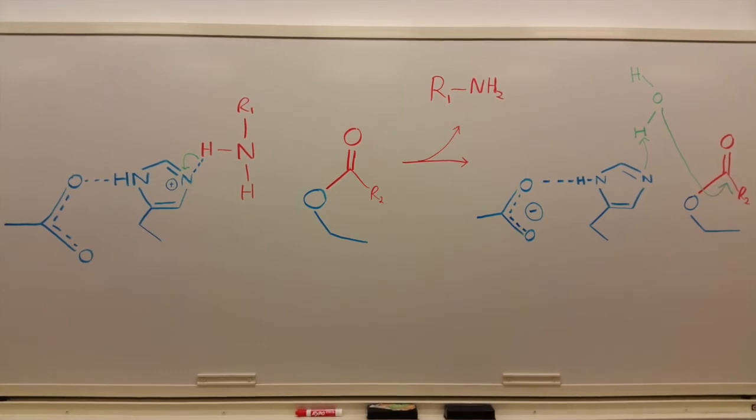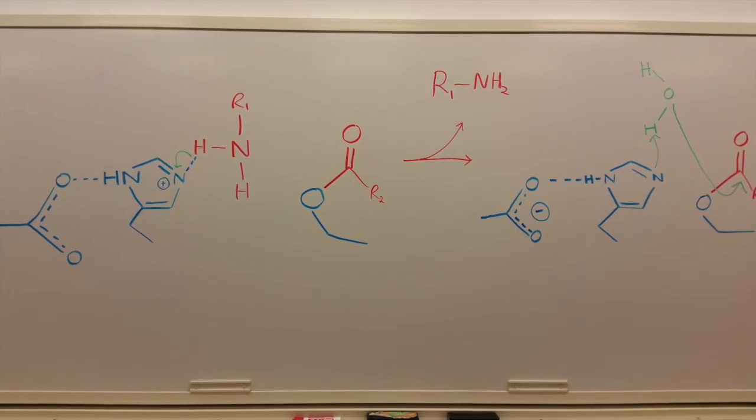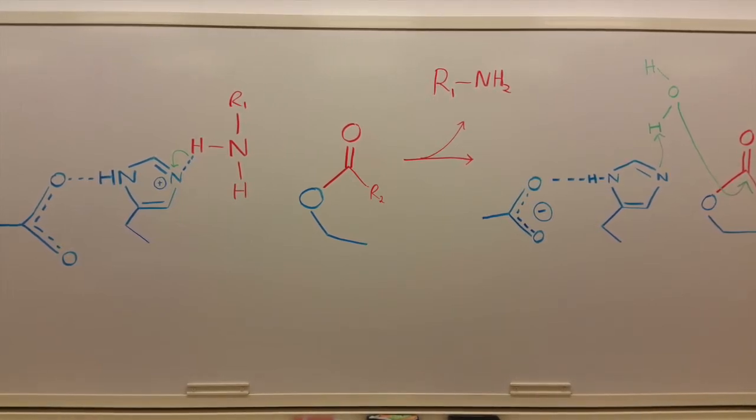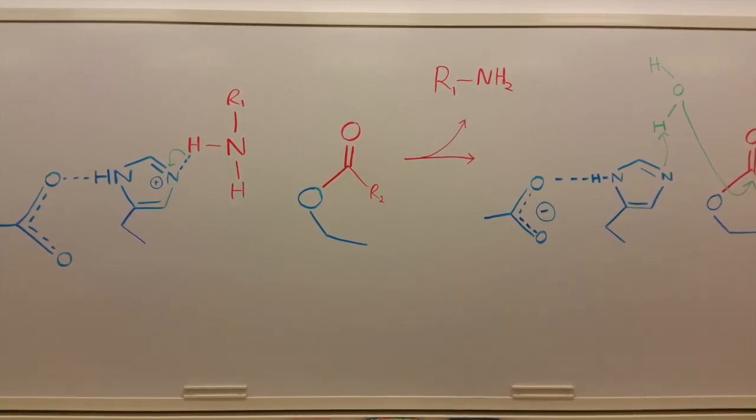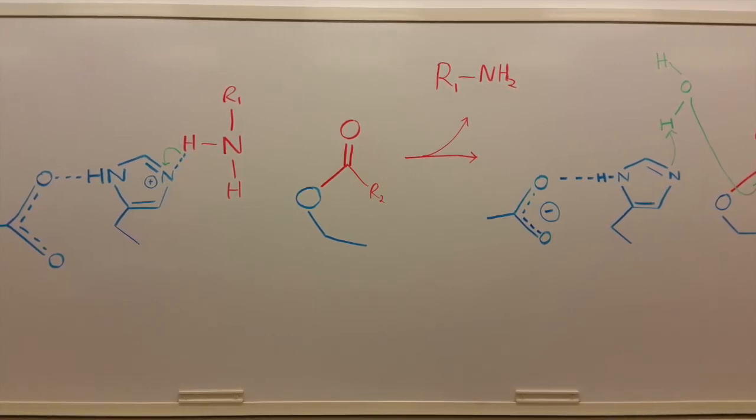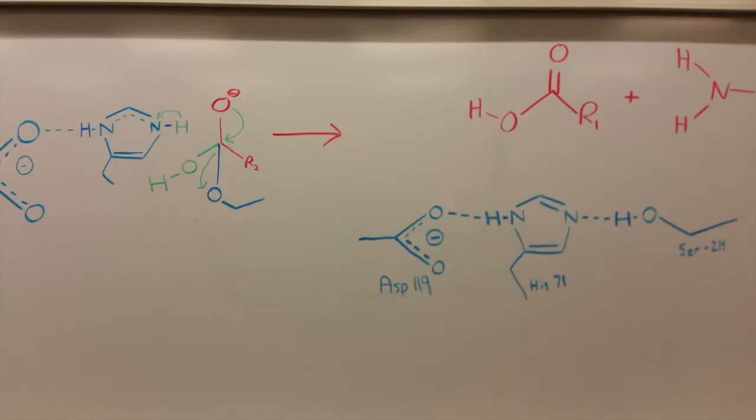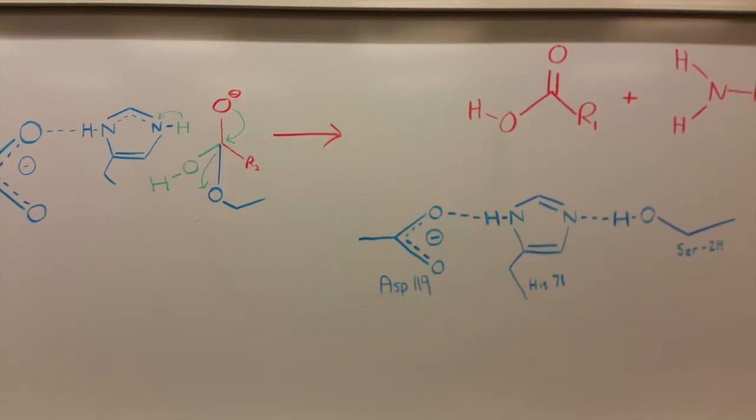After the release of the first product, a water molecule comes in. The water molecule protonates histidine-71, producing a reactive hydroxide molecule. This hydroxide attacks the acyl enzyme complex, resulting in the formation of another tetrahedral intermediate.